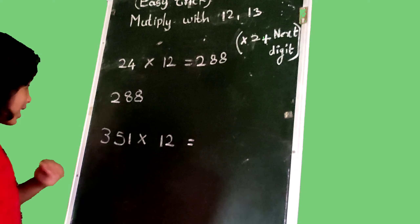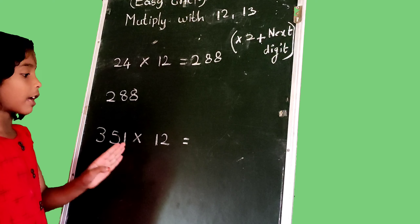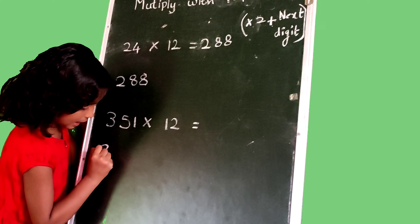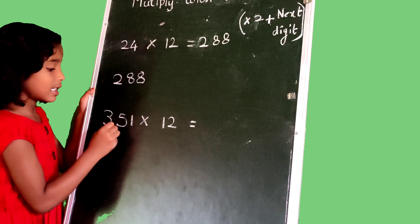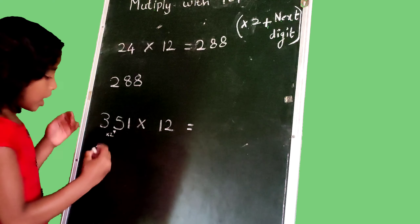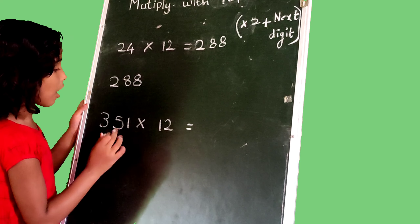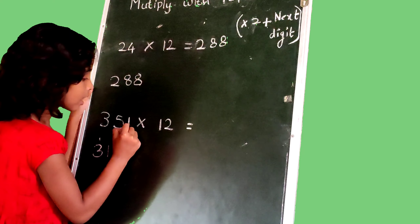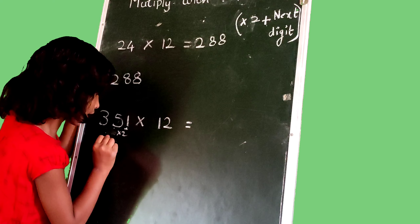Then another example: 351 multiply with 12. We drop 3 as this, we multiply with 2. 3 times 2 is 6, add next number: 6 plus 5 is 11. We write 1 and carry 1. Then 5, we multiply with 2: 5 times 2 is 10, add next number: 10 plus 1 is 11. We write 1 and carry 1.